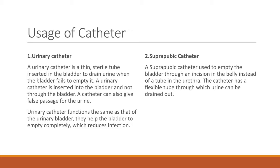Suprapubic catheter: A suprapubic catheter is used to empty the bladder through an incision in the belly, instead of a tube in the urethra. The catheter has a flexible tube through which urine can be drained out.